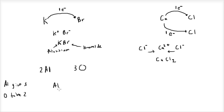You have 2 aluminums and 3 oxygens. This is aluminum oxide, Al₂O₃.